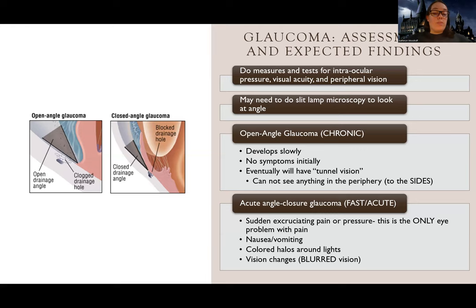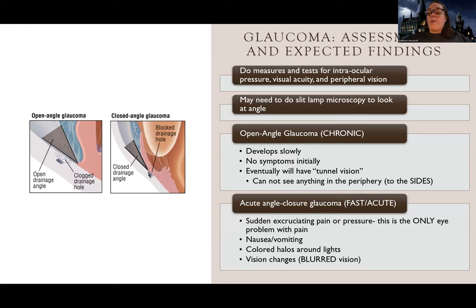With open angle, it develops slowly. Usually they have no symptoms — they might occasionally have mild pain, but usually no symptoms. What happens is they have no symptoms, and then one day they notice they can't see in their periphery — they start to lose what we call tunnel vision, or they lose their peripheral vision. This is why we do that peripheral vision exam, putting a finger out and seeing if they can see when it moves. If they're losing their peripheral vision, they wouldn't be able to see that.